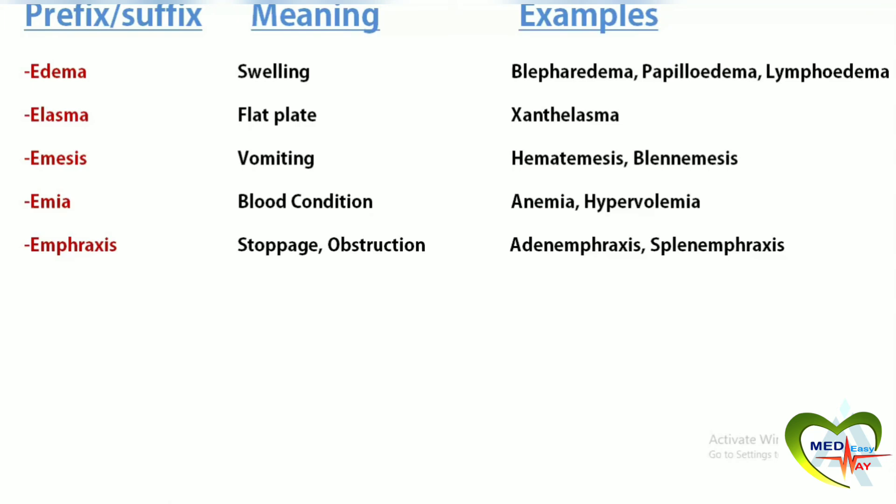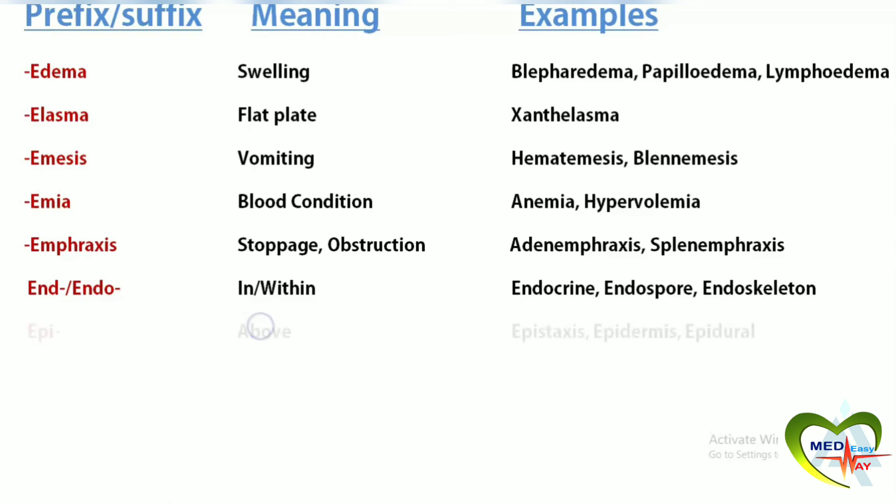End or endo means inner or within. Endocrine refers to hormones released by internal glands. Endospore is a spore that develops inside bacterial cells. Endoskeleton is the internal skeleton.